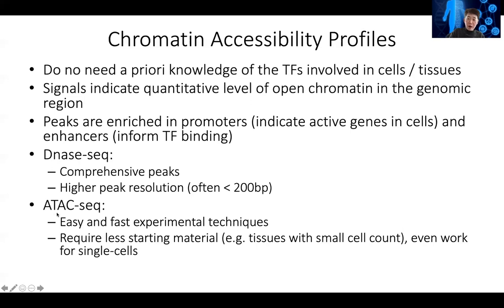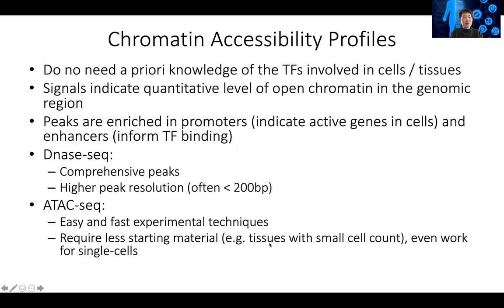ATAC-seq is becoming more popular because it's very easy to do — any student can learn and generate really good quality data. It's also really fast since the ATAC-seq protocol and the Illumina sequencing protocol are basically the same experiment. It also requires less starting material: you can start with a few hundred to tens of thousands of cells, whereas DNase-seq usually requires 10 to 100 million cells. Recently, single-cell ATAC-seq has been invented and is working very, very well.